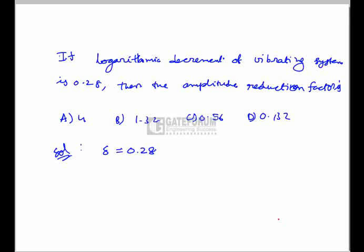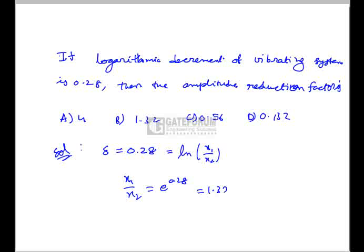The logarithmic decrement of a vibrating system is 0.28. The amplitude reduction factor options are 4, 1.32, 0.56, and 0.13. The logarithmic decrement is given by δ = ln(x₁/x₂), where x₁/x₂ is the amplitude reduction factor. From this, x₁/x₂ = e^0.28, which gives 1.32. The correct option is B.